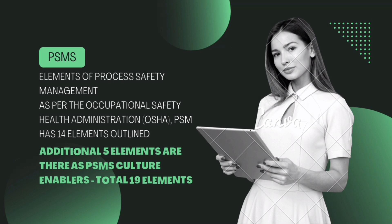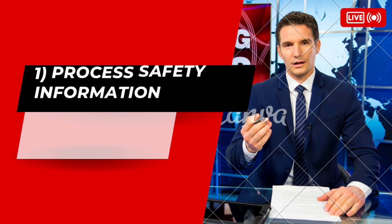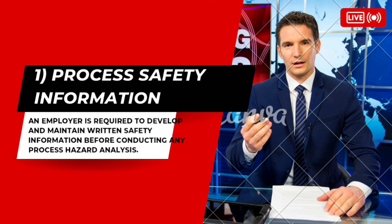So let's begin our elements introduction. What is the process safety information? In a written document, there is any safety-related information required before hazard analysis, including PFD, P&ID, MSDS — all basic details are compulsory process safety information.